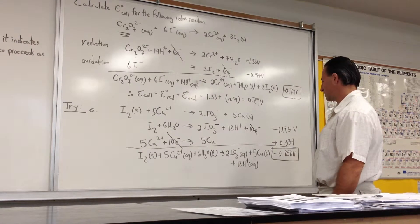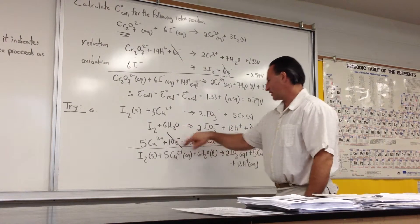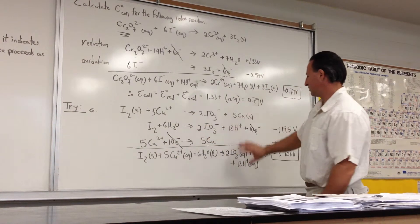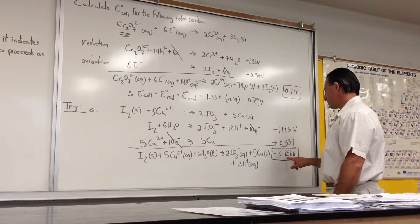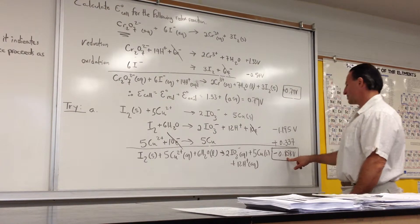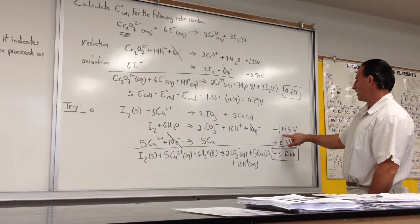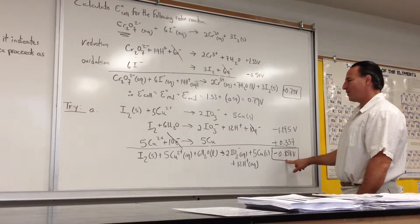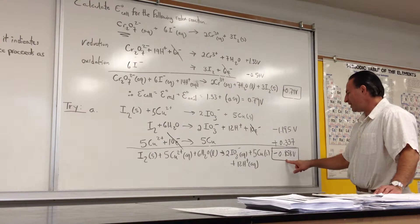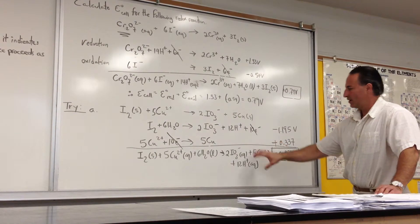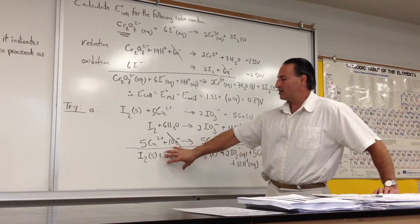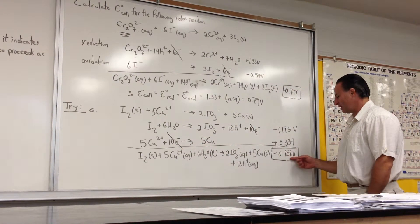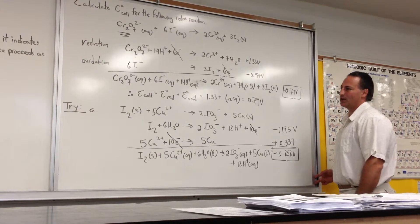When you add them together, the electrons cancel, and you write everything else. Everything that's on the left here, everything that's on the right is over here. And the net cell potential is negative 1.195 plus 0.337. So we have a negative cell potential. So what that means in this case is the reaction actually runs the other way. These should be the reactants, and these would be the products to give you a positive cell potential. When you have a negative cell potential, it simply means the reaction runs the other way.